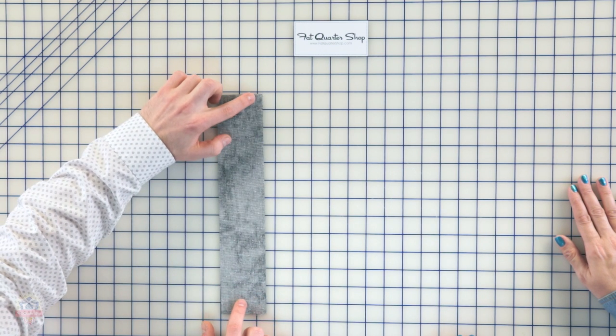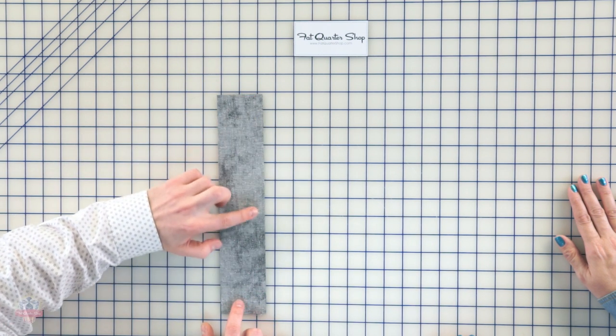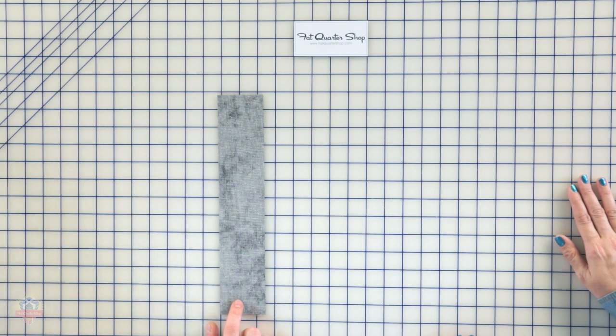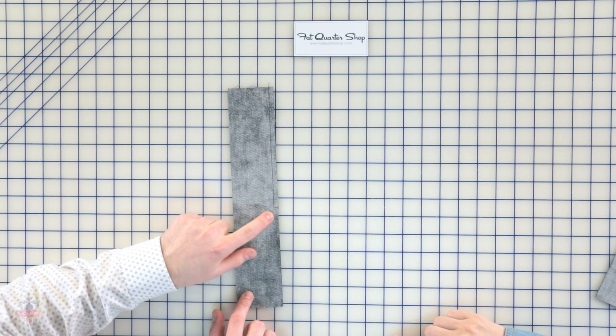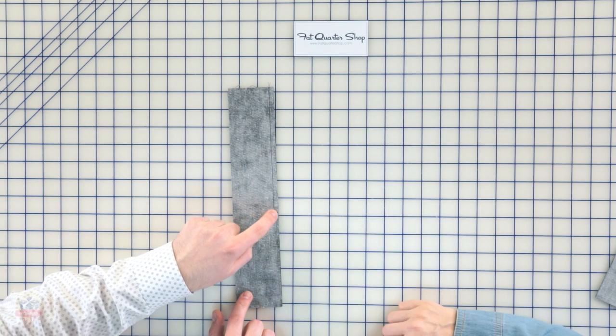We're gonna place them right sides together, line them up on all four sides. We are gonna start up at the top right and sew a quarter of an inch down about halfway. And we're gonna pivot. We are making a partial seam. Halfway down, pivot 90 degrees, and you're gonna sew off.